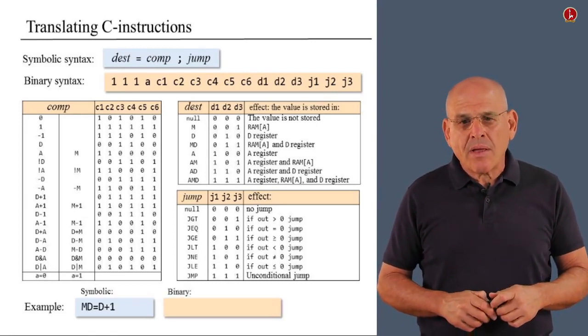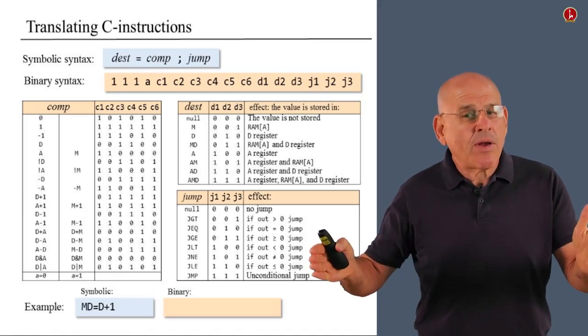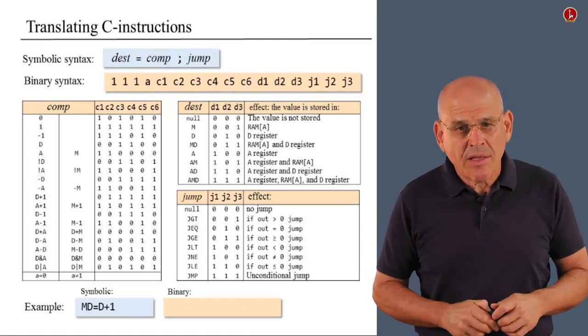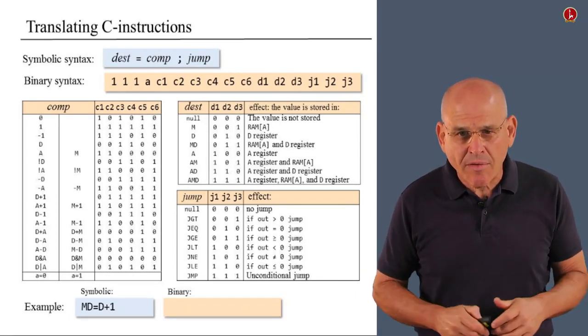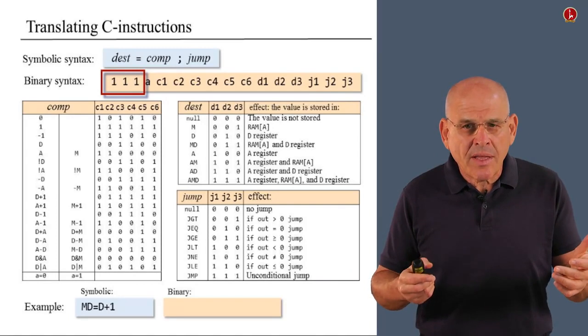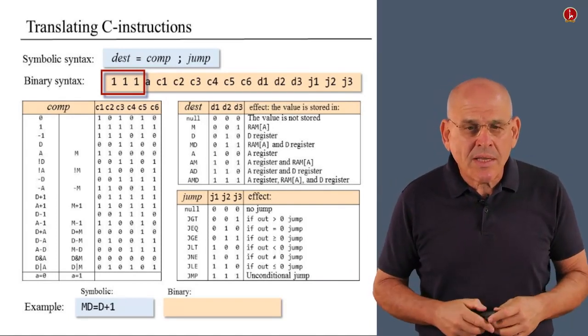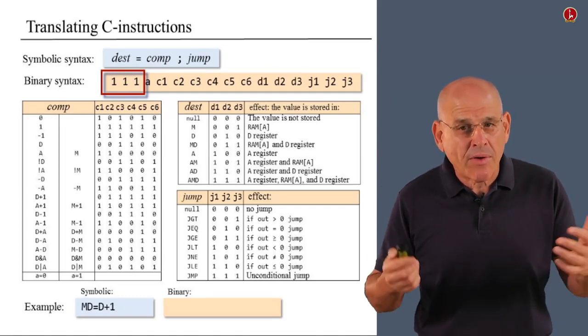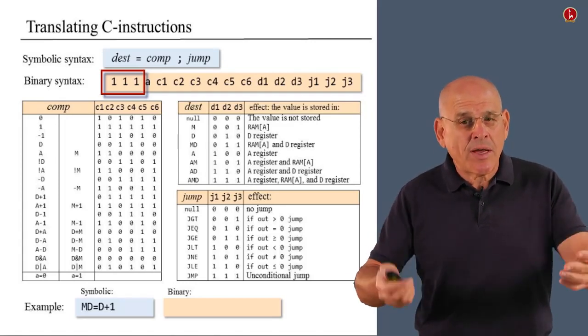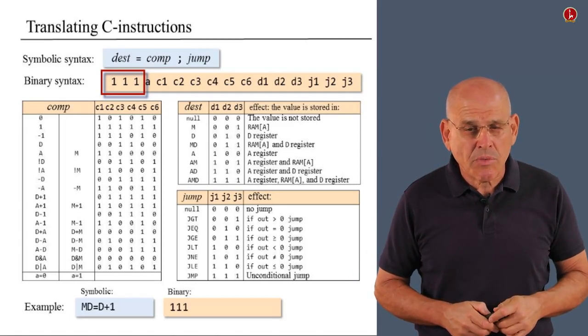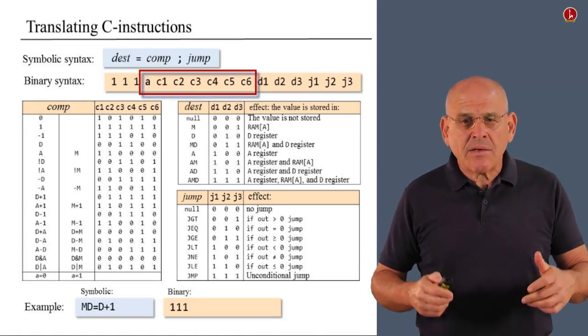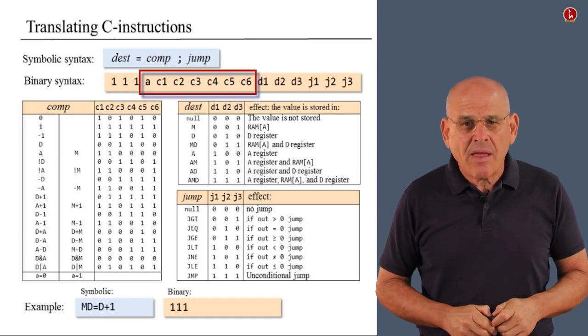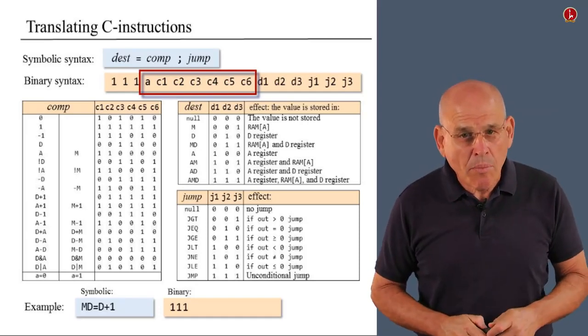So, let us begin to put together the string of characters that will end up representing the binary code of MD equals D plus 1. We can do it in many different ways and here is one of them. Focusing on the target expression, we see that every C instruction begins with three ones when it comes to the binary flavor of C instructions. So, we initialize the string that we are building with three ones. That's what we do when we get started. Next, we focus on the next seven bits that we have to create.